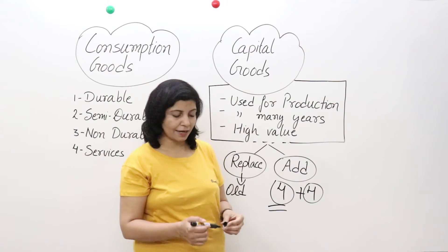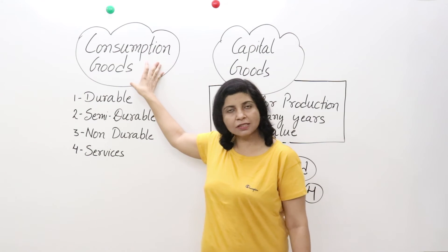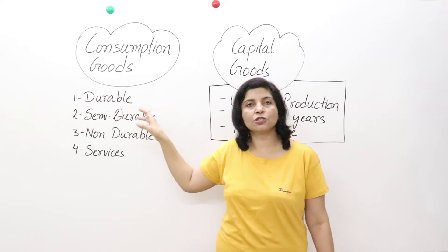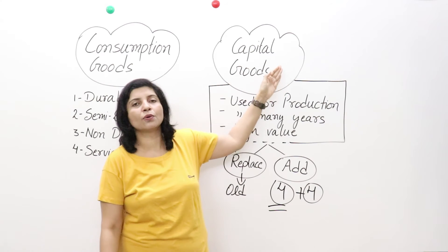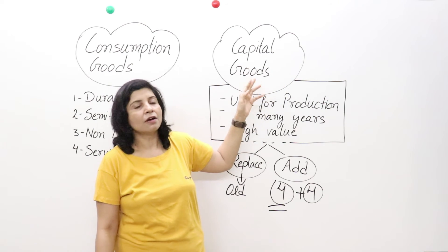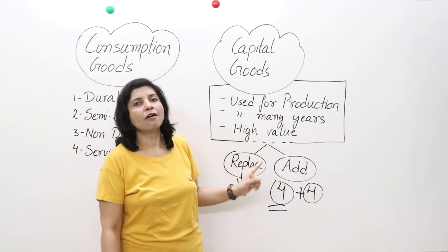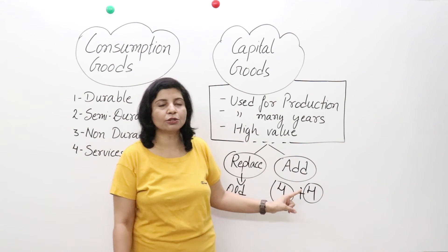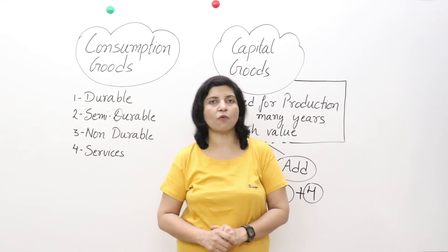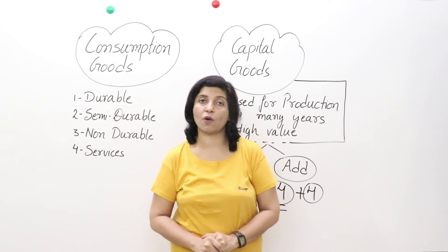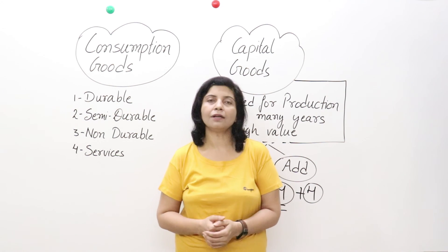To summarize: consumption goods are used by consumers for satisfaction of their needs and wants, and are of four types — durable, semi-durable, non-durable, and services. Capital goods are used by producers for production of goods and services to earn profit; they are of high value, used for many years, and purchased to replace old machines or add to existing capital stock. If you have any questions, please forward them to us, subscribe to the channel, and press the bell icon for future updates. Thank you.